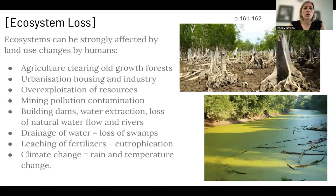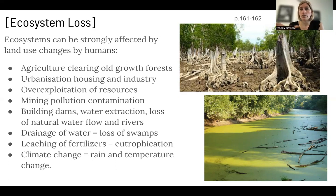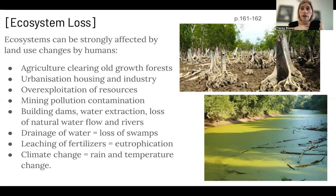Ecosystems can be strongly affected by land use changes by humans. These include agricultural usage — clearing of forest for agricultural land — and urbanization with housing and industry. This could be changing swamps, or for example cutting down mangroves to build resort complexes near an ocean. Overexploitation of resources would be something like overfishing, which happened in Canada with the cod fishery and caused the entire industry to collapse.